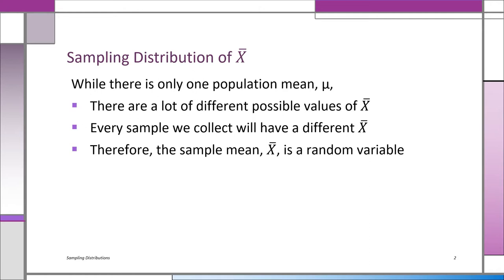But think about it a minute. You could have taken a different sample and would have had a different x-bar, and yet another sample would give you yet another value of x-bar. You could have hundreds or thousands of samples, each one with a different value of x-bar. There's only one population mean mu.